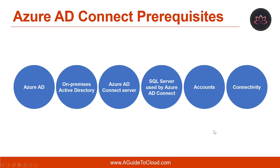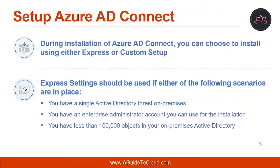The last prerequisite is connectivity. The Azure AD Connect Server needs DNS resolution for both intranet and internet. The DNS server must be able to resolve names both to your on-premises Active Directory and the Azure AD endpoints. Installing Azure AD Connect is accomplished by running a configuration wizard that performs additional installation and configuration tasks during the implementation.